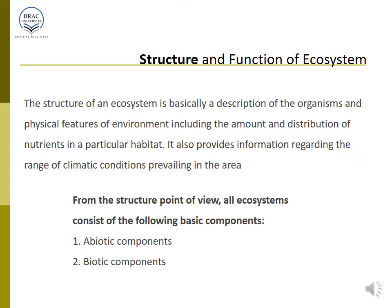The structure of the ecosystem is about description of the ecosystem, its organisms, and the physical features of the environment, including the amount and distribution of nutrients in a particular habitat. It also provides information regarding the range of climatic conditions prevailing in the area. Structure is essentially about organisms, their characteristics, and how nutrients are distributed in a habitat.